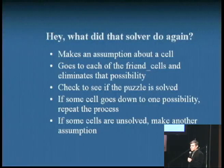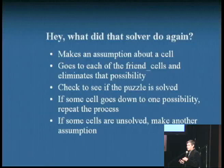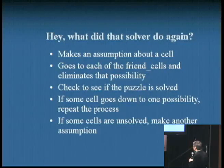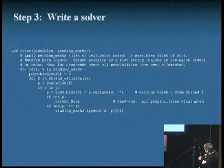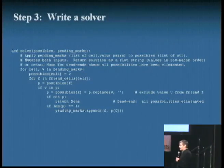Here's a slide describing the logic. Make an assumption. Go to all the friend cells. Eliminate the possibilities made by that assumption. Always teach the kids at any given point, check to see if the puzzle is solved. An amazing number of programs won't terminate because they've already solved the puzzle, but continue searching. This is also a lesson for us adults. Some cell goes down to one possibility. Let's fill that in. If there's some cells unsolved, make another assumption. If an assumption turns out to be invalid, unmake that assumption, backtrack, start again. The interesting part of this code, about a dozen lines can be covered in an hour-long class.